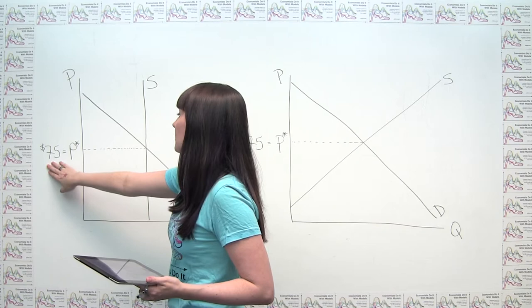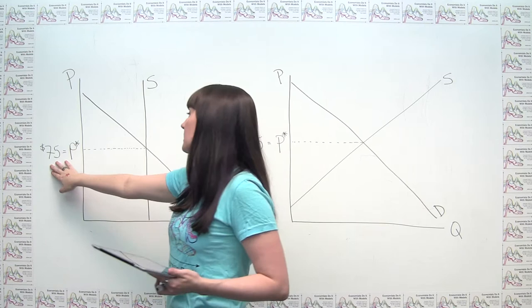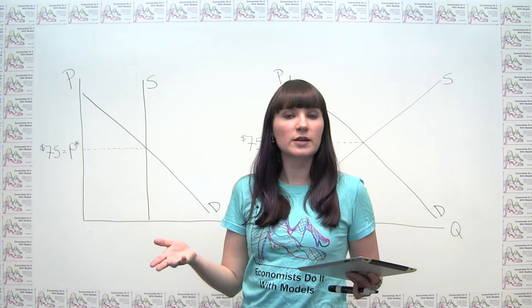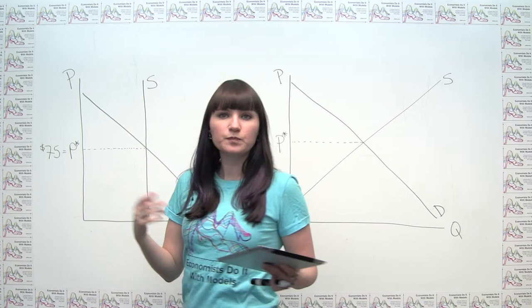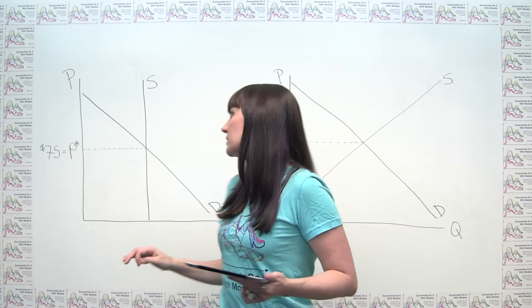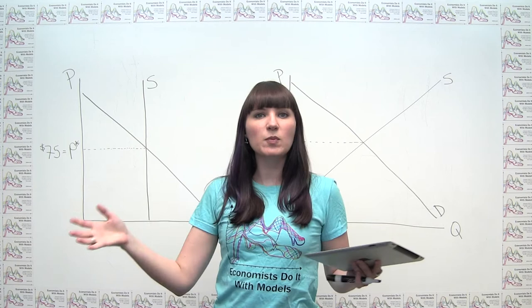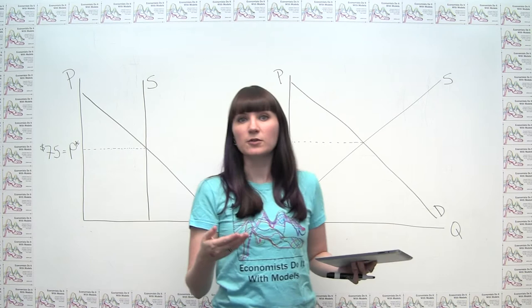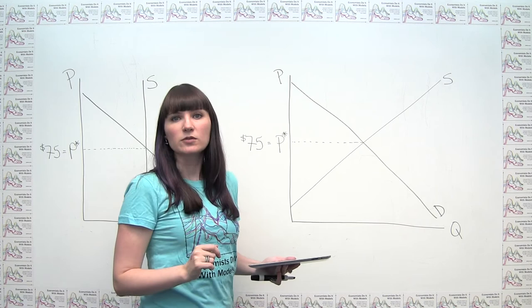And regardless of how we draw it, we're still going to be making roughly the same points. But you'll notice in either case, I labeled this $75 as our P-Star, as our equilibrium price. And of course, that's making the assumption that yes, the artist sold out the show at an average price of $75. By putting this at the equilibrium price, I actually made the assumption that there was no excess demand at that price.